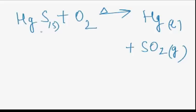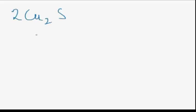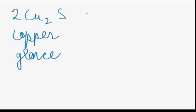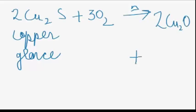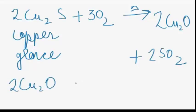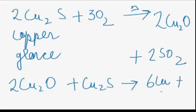Copper is also extracted from its sulphide ore. Copper glance (Cu2S), when heated in the presence of air, forms copper oxide (2Cu2O) along with sulphur dioxide gas. The overall reaction is: 2Cu2O + Cu2S, when heat is applied, yields copper along with sulphur dioxide gas.